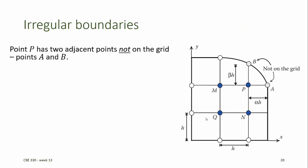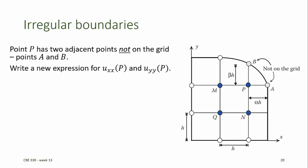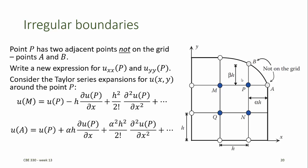We can also write finite difference equations when our domain has irregular boundaries. For example, at the point labeled p, the two adjacent points a and b are not on our grid. To write the finite difference expressions for the second partial derivatives of u in the x and y directions at point p, we need to go back to the Taylor series expansion used to derive the finite difference equations and recognize that our step size h is now no longer constant. In the x-direction, for example, the step size is now alpha times h, where alpha is some fraction. When we write the Taylor series expansion around point p to predict the value at point m, the step size is h. But when we write the Taylor series expansion around point p to predict the value of u at point a, the step size is alpha h.